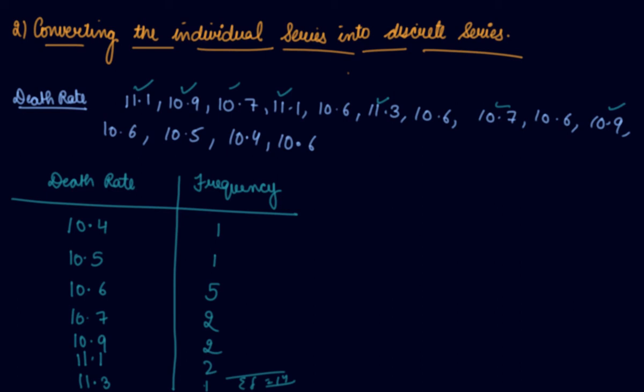Now the highest frequency is 5. So 10.6 is your mode because it has the highest frequency of 5. It occurs 5 times in the series, which is the highest among all.